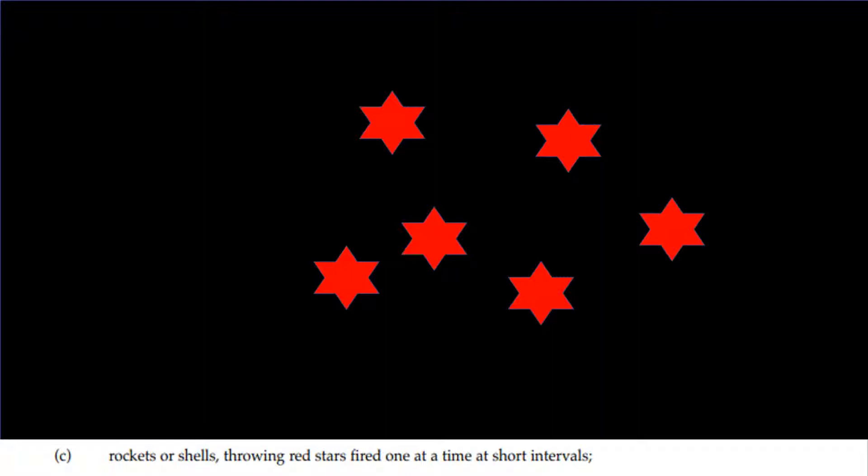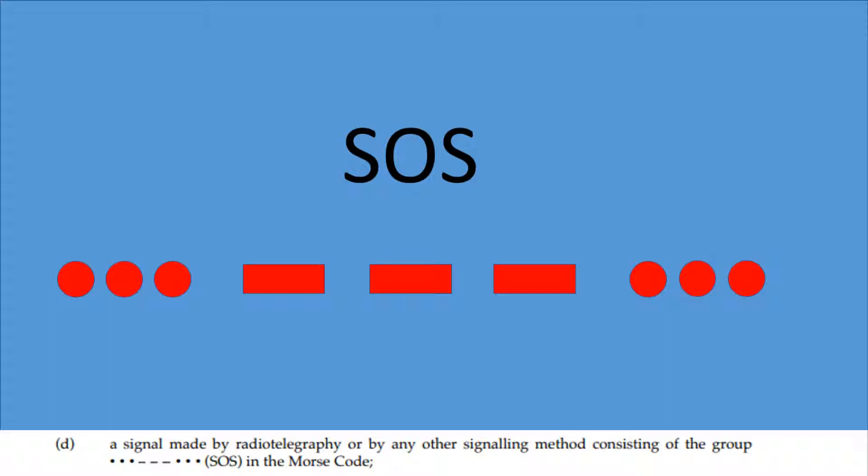A signal made by radio telegraphy or by any other signaling method consisting of the group dot dot dot, dash dash dash, dot dot dot - SOS in Morse code.